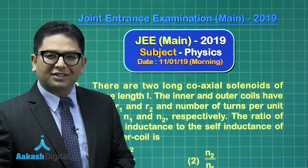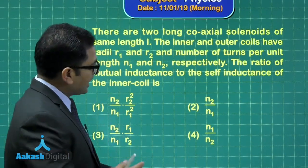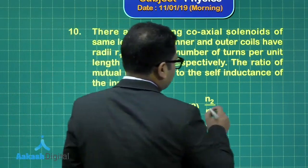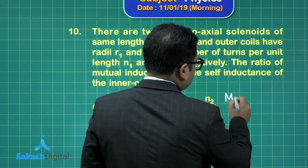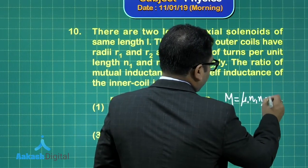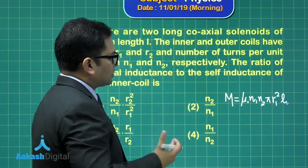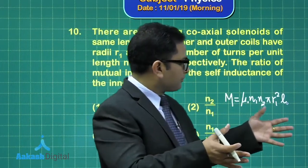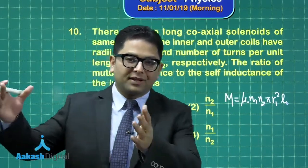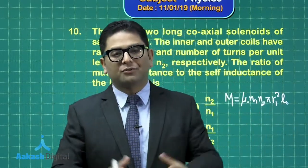This comes out to be very straightforward. The mutual inductance between these two is going to be μ₀ N1 N2 π R1² L. Alternatively, it just takes one step — you pass the current to the outer solenoid and calculate the flux through the inner one, so that φ divided by current gives you the mutual inductance.